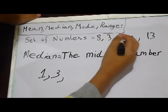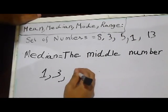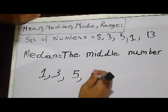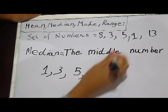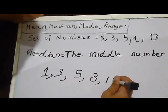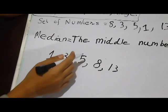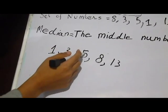So, the next one, let's see, 5. Next one, 8. And the final one left is 13. Okay, so, the median, what would you think it would be? It would actually be 5.